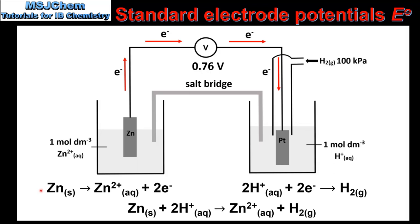Here we have the half equations for the reactions that take place at the anode and the cathode. In the zinc half cell the zinc electrode is being oxidized, and in the SHE hydrogen ions are being reduced. This reaction takes place because zinc is a stronger reducing agent and therefore has a greater tendency to undergo oxidation.